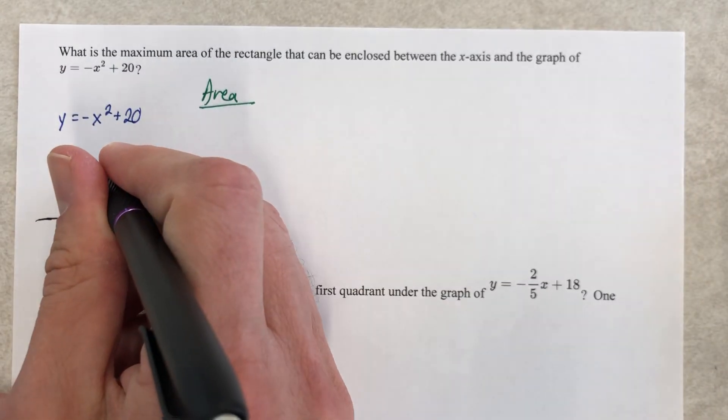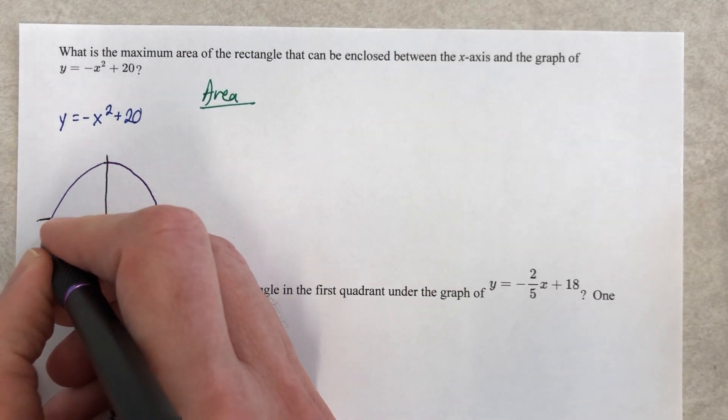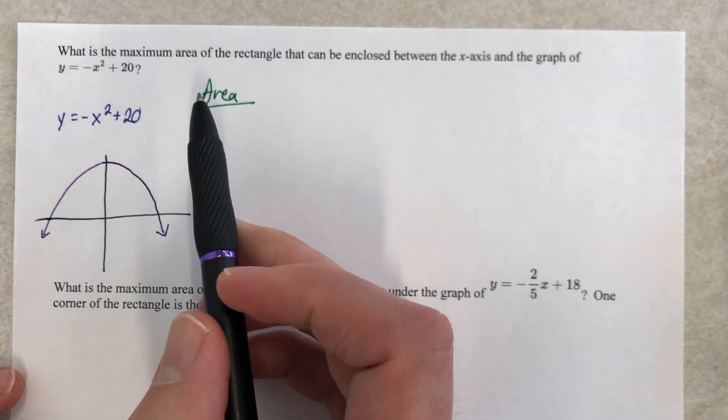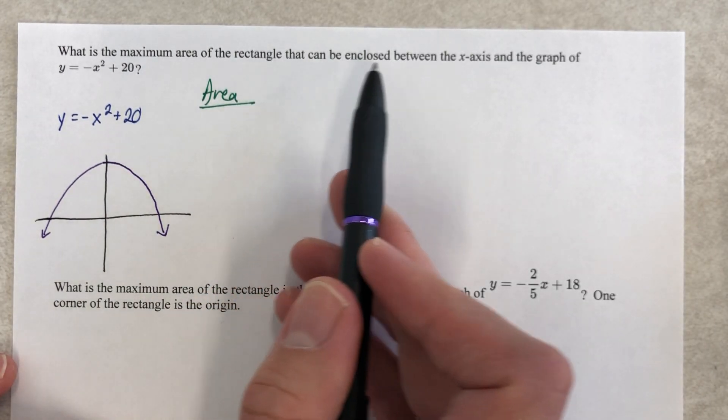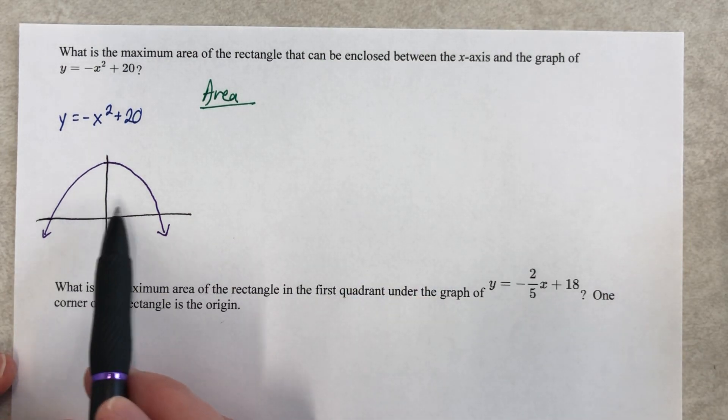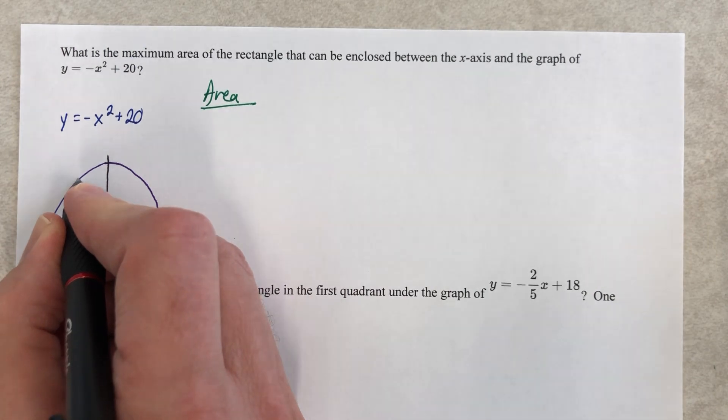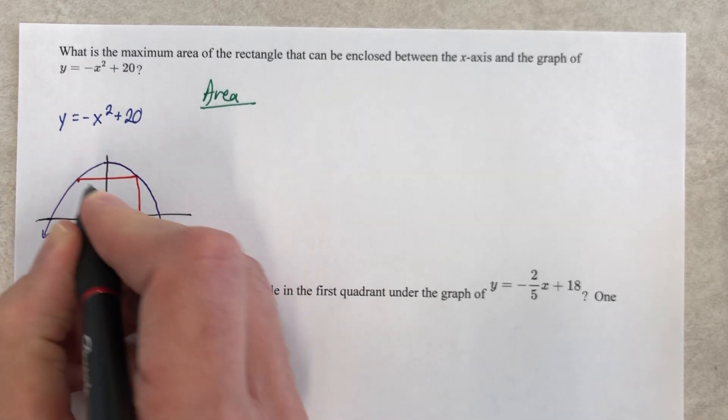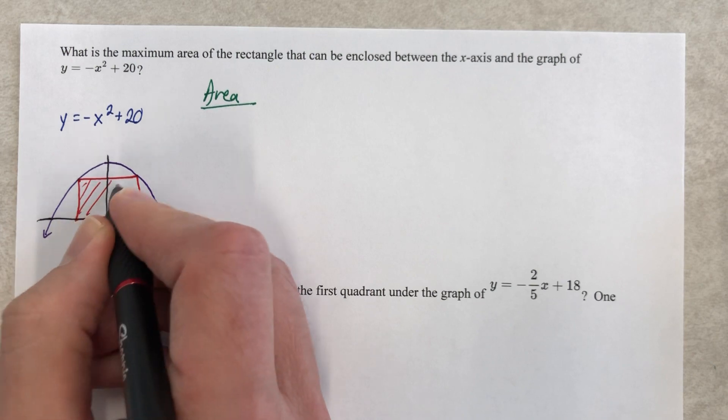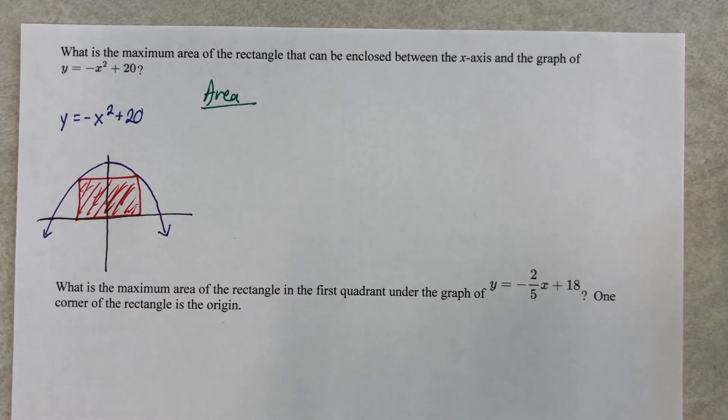There's that. There's that. And that's what this parabola looks like. And we want to have a rectangle that's enclosed between the x-axis and that graph, which is not going to happen down here. It's going to happen up here. So we need a rectangle like this. That's it. There's our rectangle.